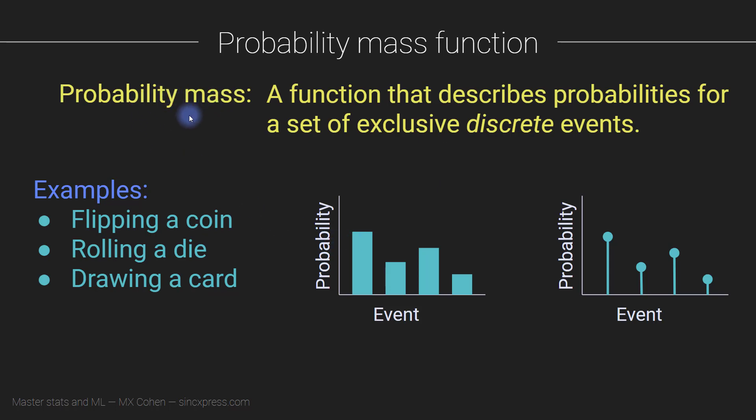So probability mass function is basically just the collection of all the probabilities for discrete events, and they all have to be exclusive. So when you flip a coin, you can't flip heads and tails at the same time.